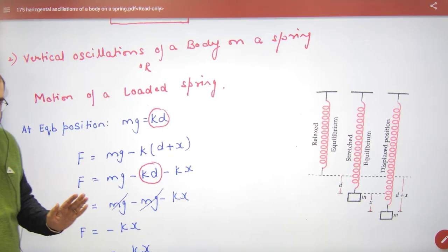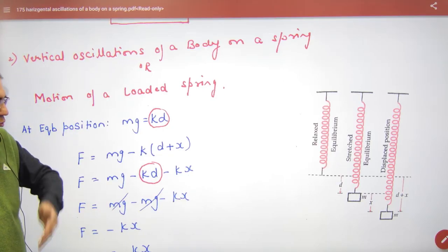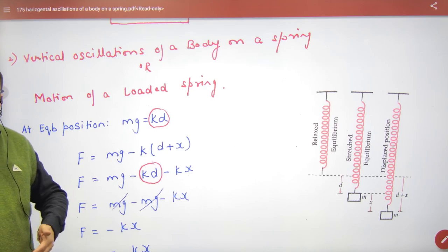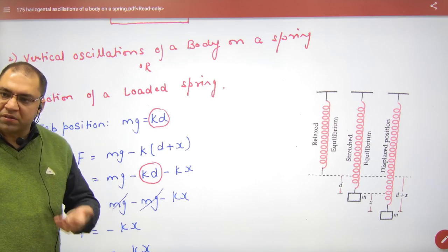In the spring mass system, if the mass is vertically up and down, then prove that it is also in SHM and calculate the time period.